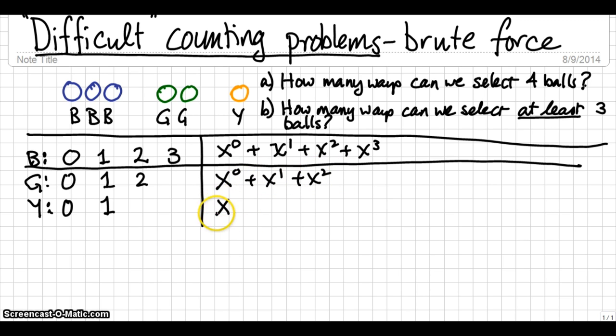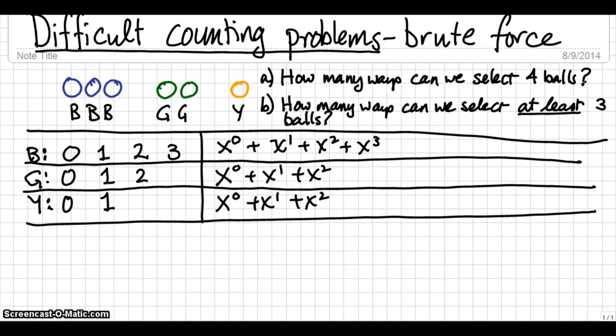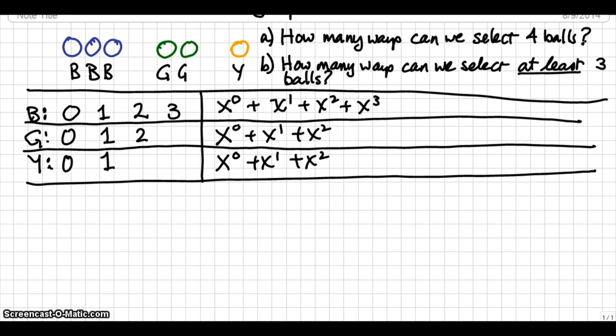Now, for green, we have x to the 0, x to the 1, and x squared. And, for y1, it's x to the 0, and x to the 1. The x squared there is actually an error. We're going to have to erase that one. Get rid of it somehow.